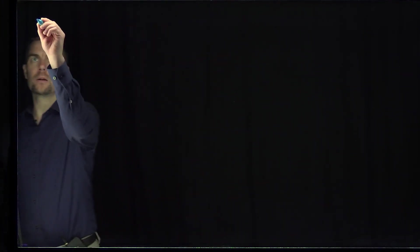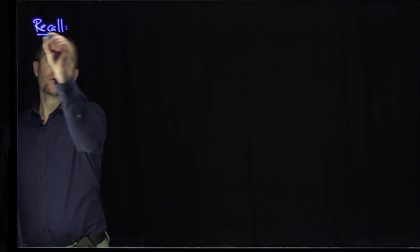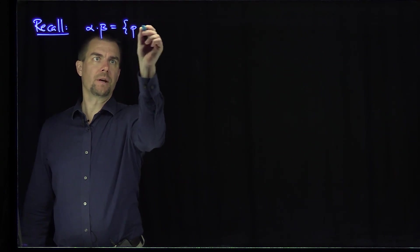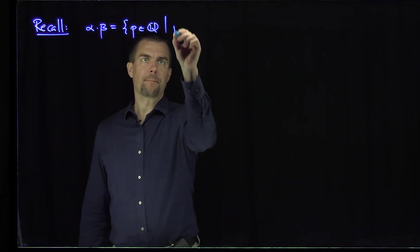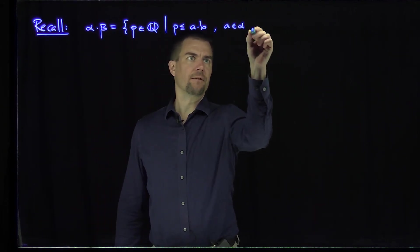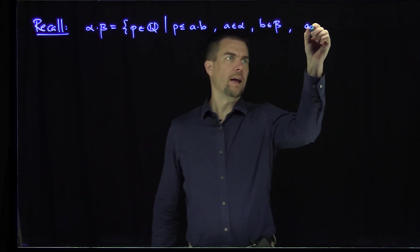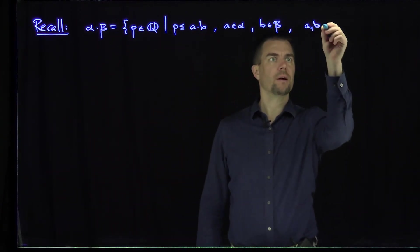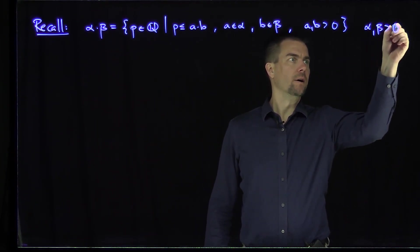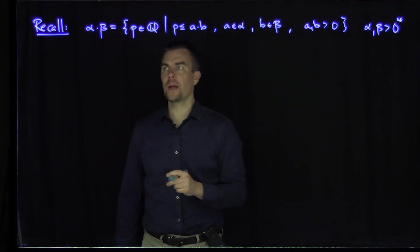Hello, students. In this video, we'll show the multiplication operation on non-negative Dedekind cuts satisfies the first couple of field axioms. So let's recall: previously we've seen that α·β was defined to be the set of all p in ℚ such that p is less than or equal to a·b, where a is in α, b is in β, and a and b are rational and greater than zero. This is in the context that α and β are bigger than the zero cut. That's our definition.